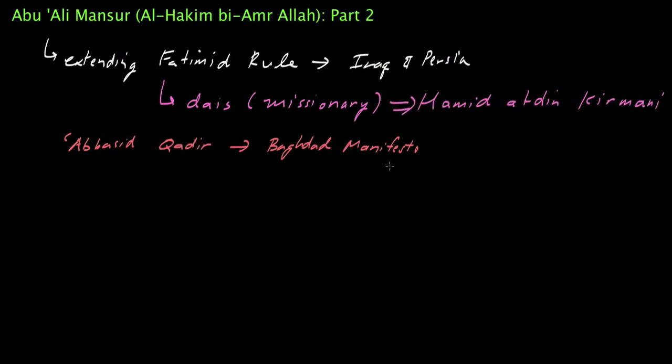Now, what happened with the document in particular is that it was actually read out during Friday prayers throughout a number of Abbasid dominions. And in addition to actually that document itself, the Abbasid Caliph Qadir also commissioned documents that tried to cast aspersions on the underlying Ismaili doctrine as well.